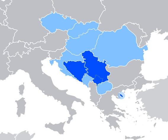Standard Serbian is based on the most widespread dialect of Serbo-Croatian, Shtokavian — more specifically on Šumadija-Vojvodina and Eastern Herzegovinian dialects, which is also the basis of Standard Croatian, Bosnian, and Montenegrin. The other dialect spoken by Serbs is Torlakian in southeastern Serbia, which is transitional to Macedonian and Bulgarian.